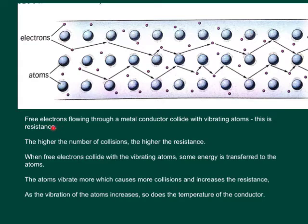So what's actually happening within this actual conductor then? Well basically the free electrons are flowing through the metal conductor and they're colliding with the vibrating atoms and it's this that's causing the resistance. The higher the number of collisions the higher the resistance and of course when the free electrons do collide with the vibrating atoms some of their energy is transferred to the actual atom itself. This gain in energy means that the atoms vibrate more which causes more collisions and even more resistance. You have to remember as well that as the vibration of the atoms increases so does the temperature of the overall conductor.